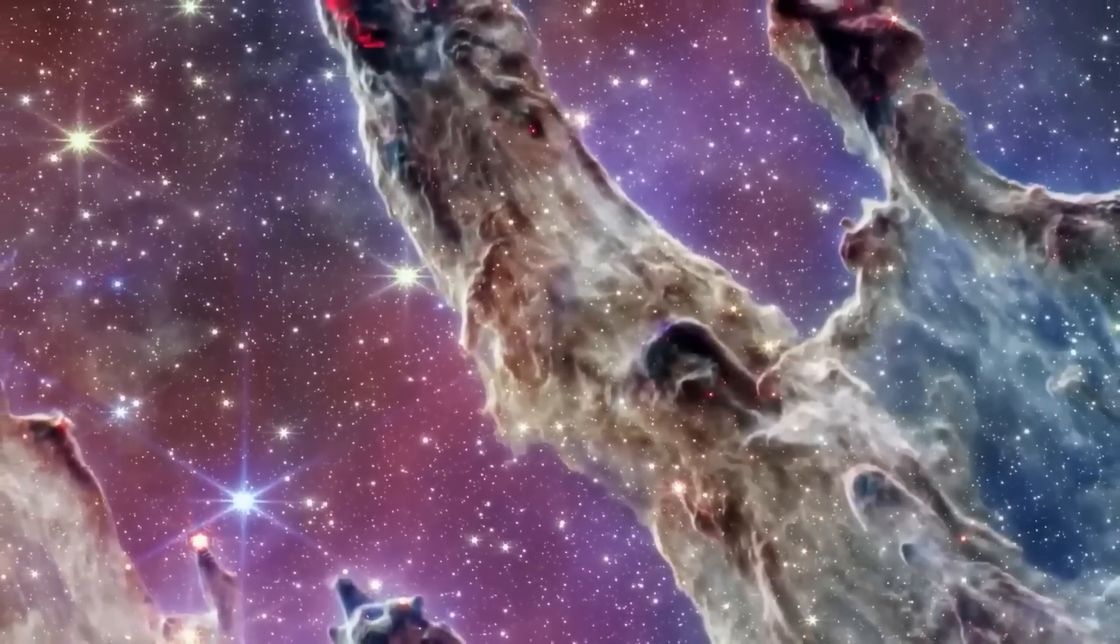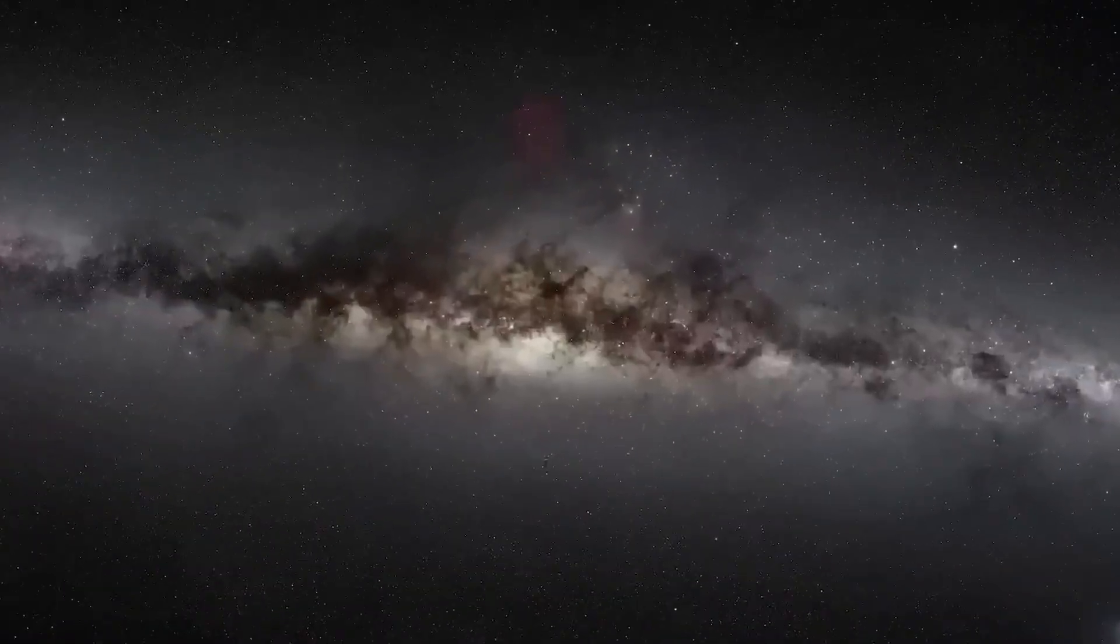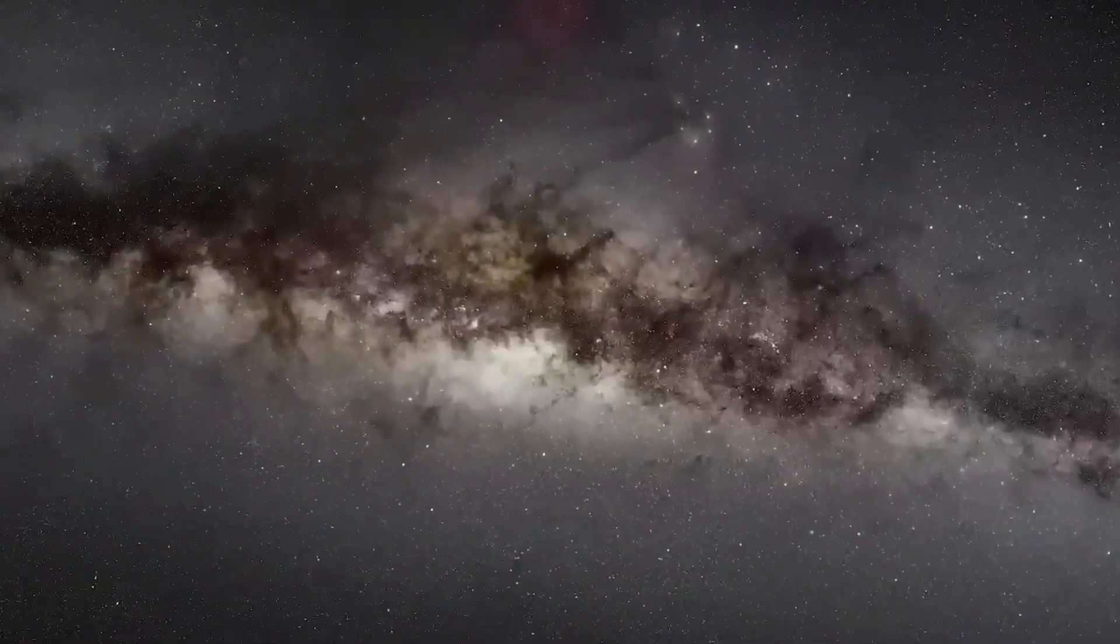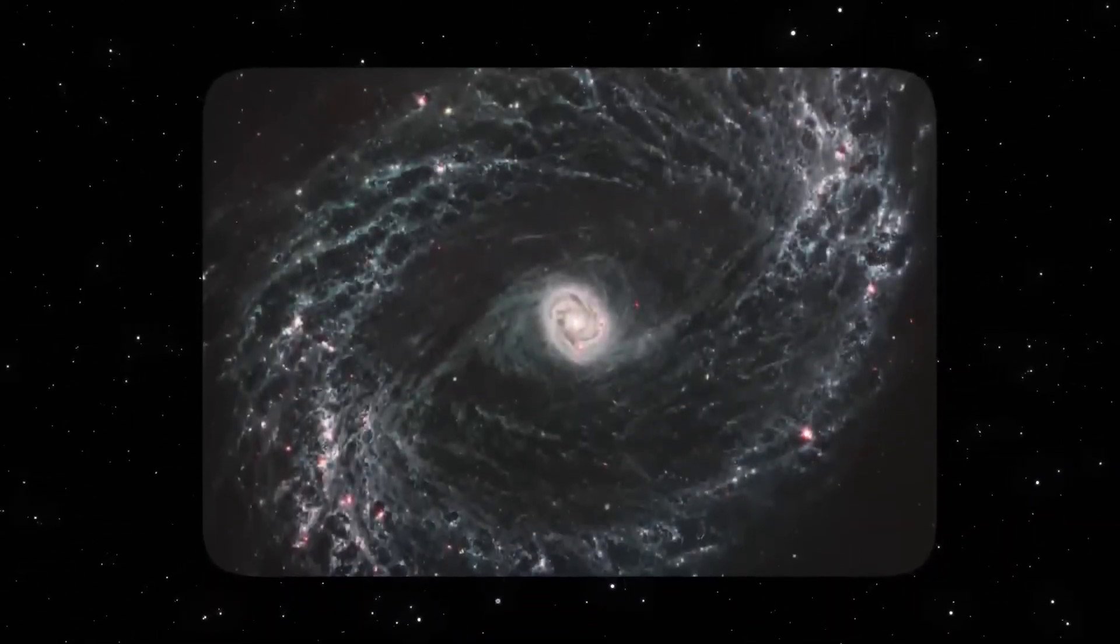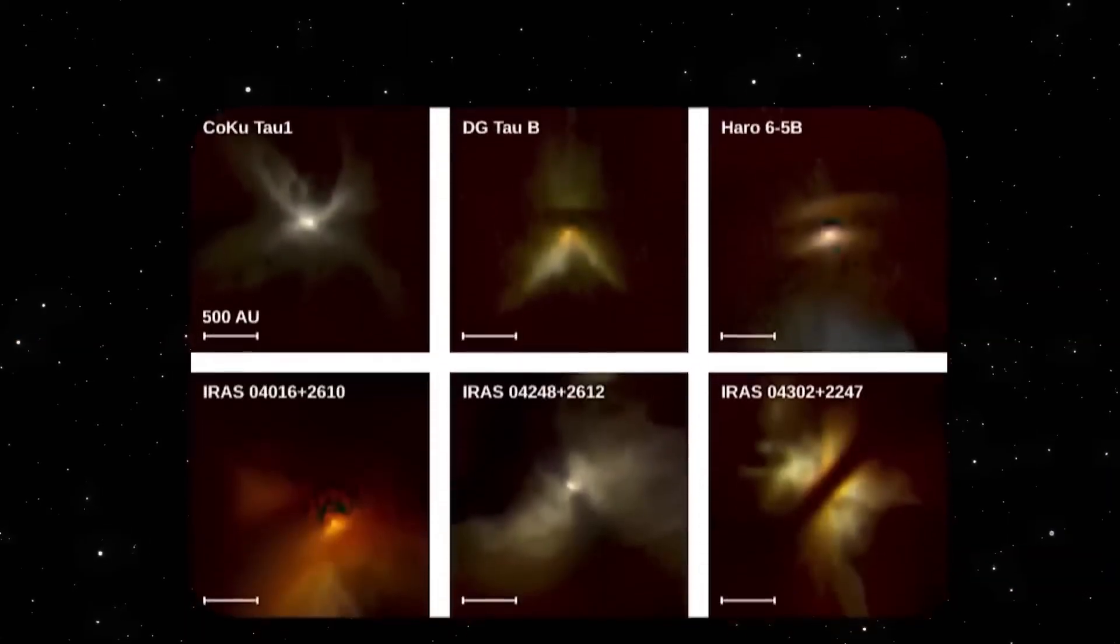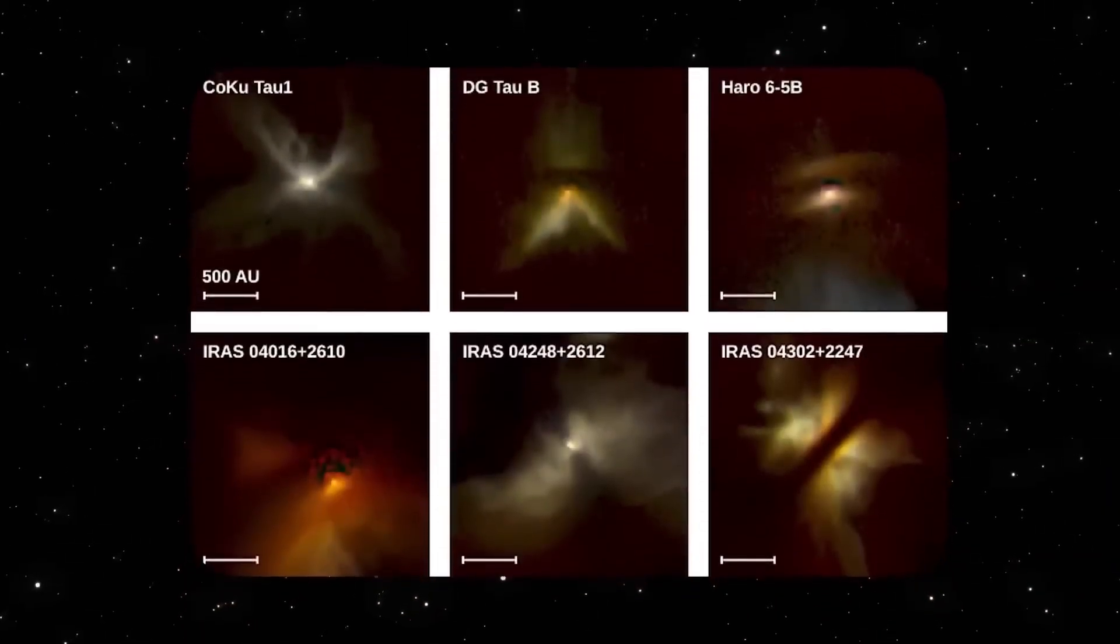Now, imagine trying to reach Alpha Centauri using the same speed as the Voyager probe. At 38,000 miles per hour, it would take about 75,000 years. These numbers reflect the staggering scale and isolation of star systems across the cosmos.